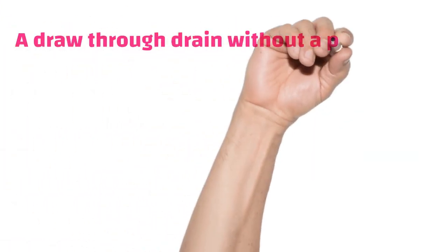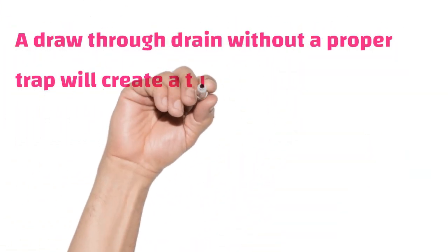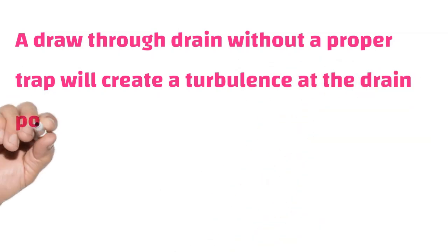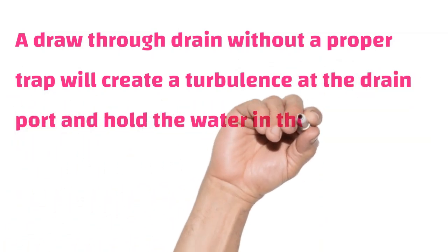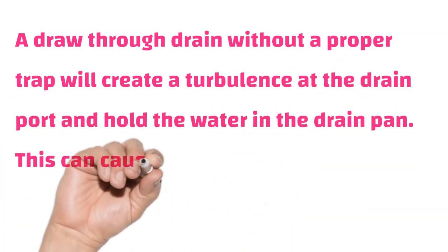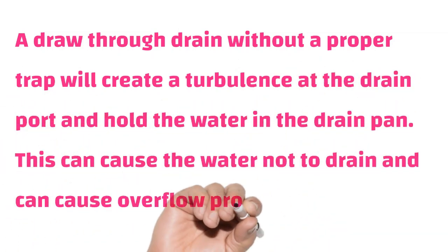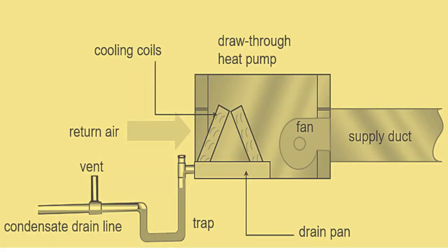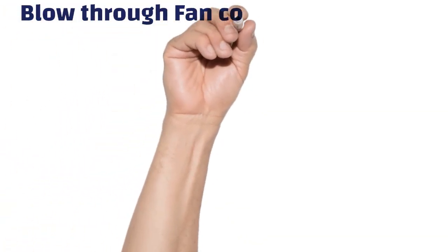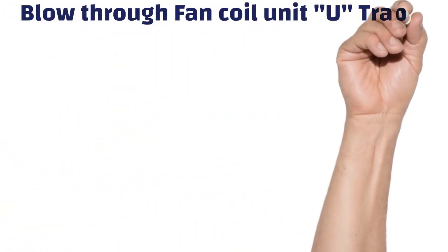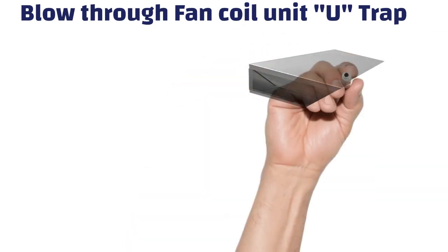A draw-through drain without a proper trap will create turbulence at the drain port and hold the water in the drain pan. This can cause the water not to drain and can cause overflow problems.